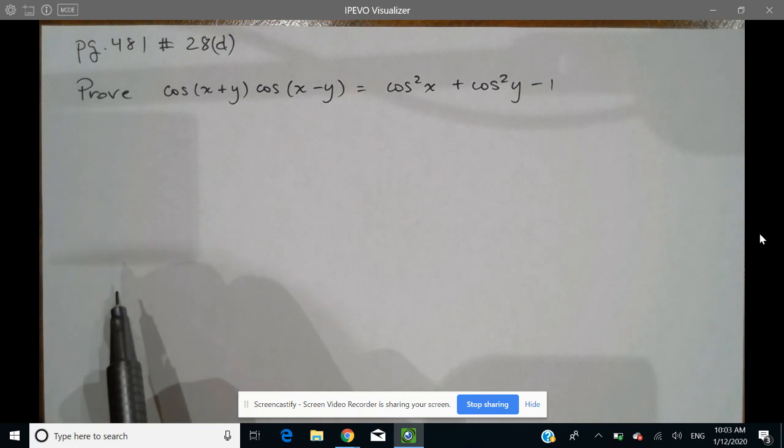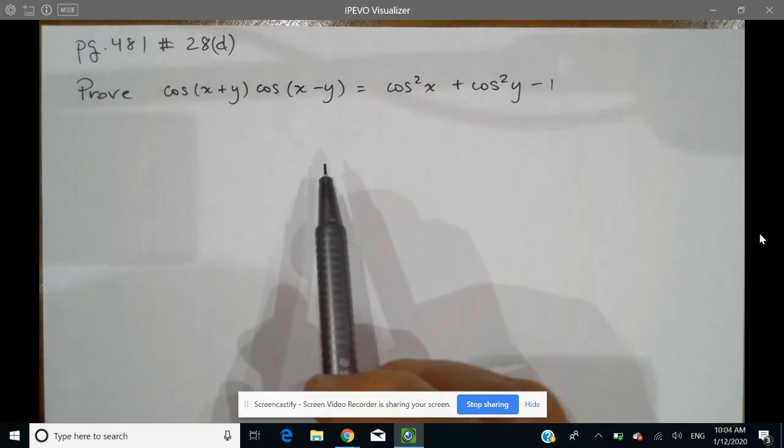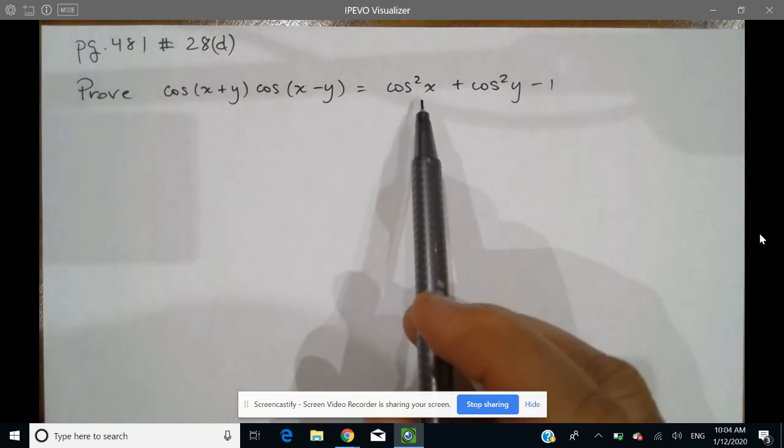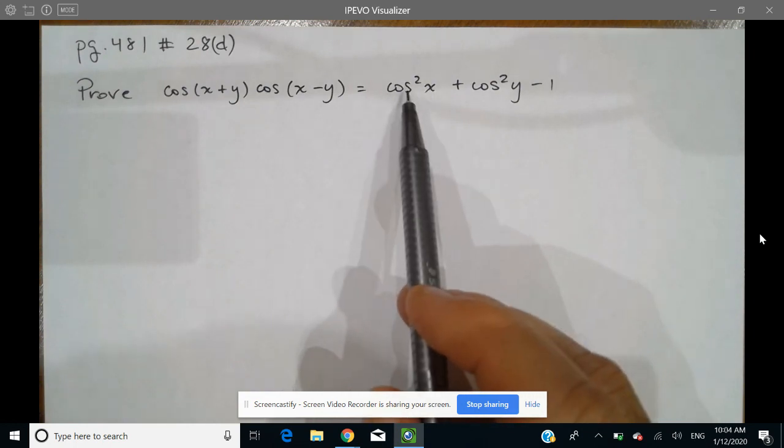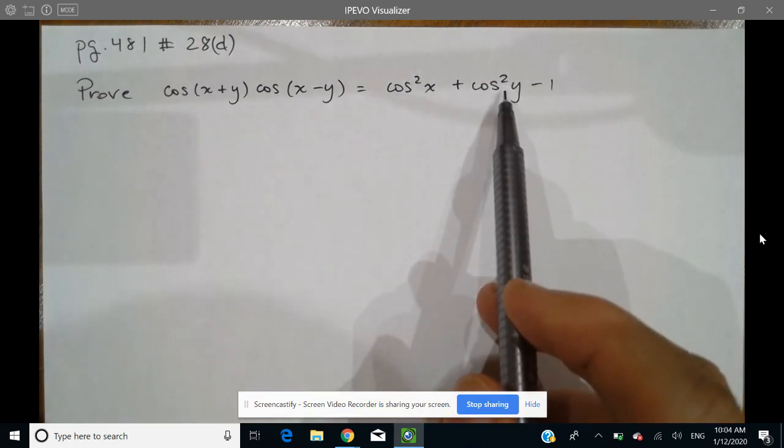So they're asking us to prove this identity. Step one is to determine what side to start with. It doesn't look like the right-hand side offers much opportunity to manipulate other than turning this into 1 minus sine squared and 1 minus sine squared for y.